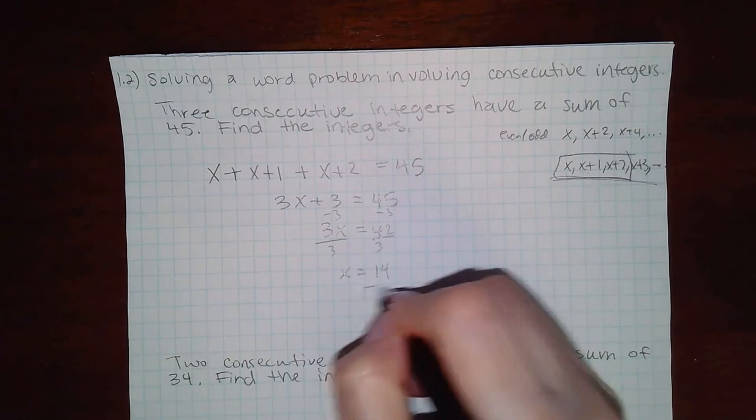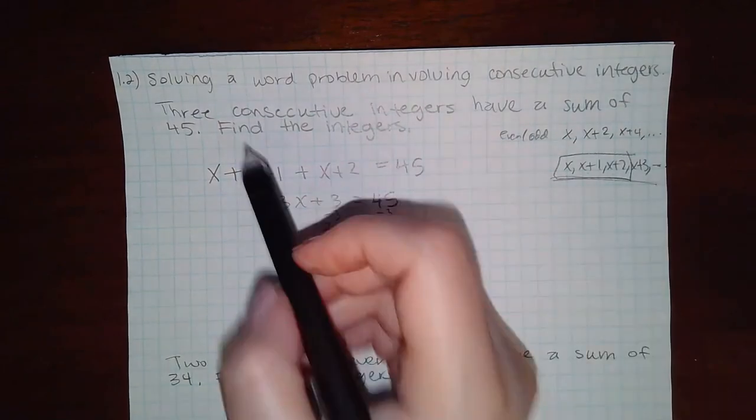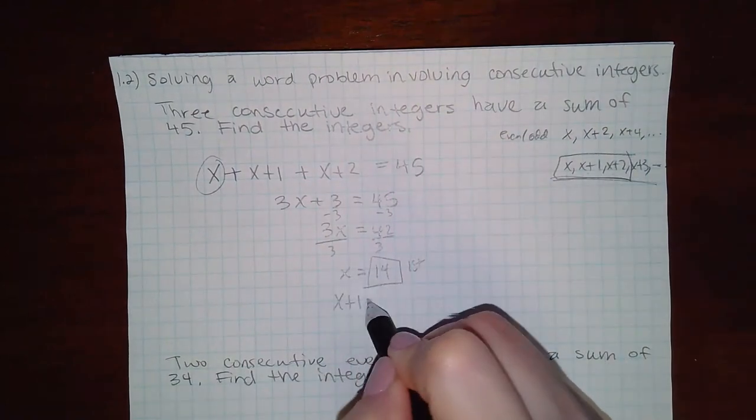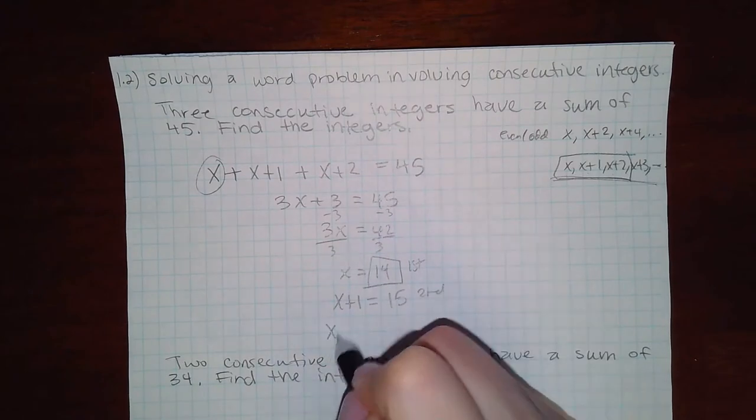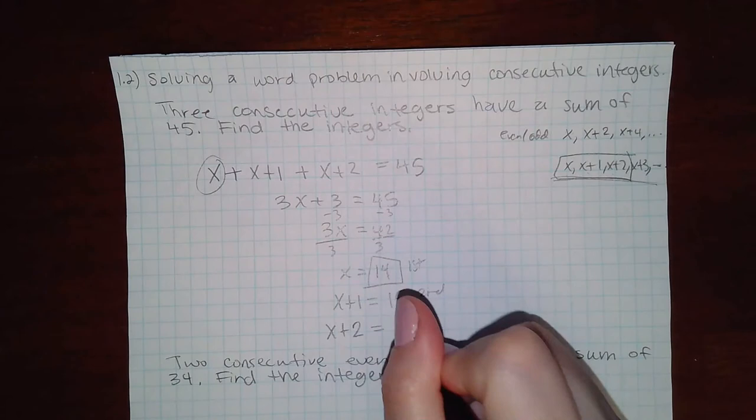That's the first number because the first is represented by x. The second is x plus 1, which is 15, the next number. Then x plus 2, which would be 14 plus 2, which is 16, and that would be the third one.